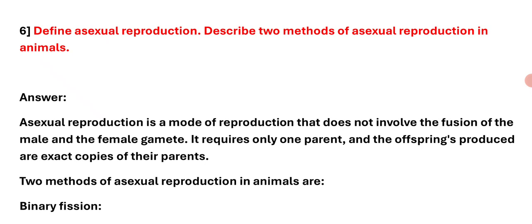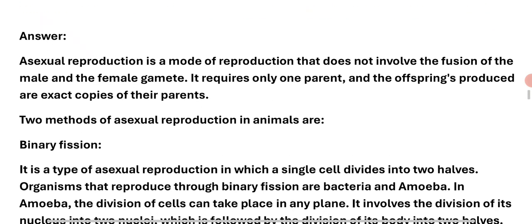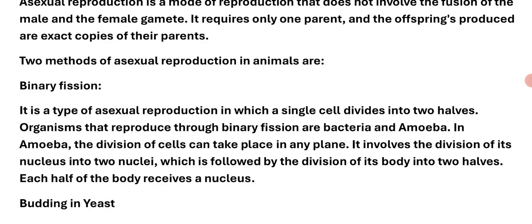Question 6: Define asexual reproduction and describe two methods of asexual reproduction in animals. Asexual reproduction is a method of reproduction that does not involve the fusion of the male and female gametes. It requires only one parent and the offspring produced are exact copies of their parents. Two methods of asexual reproduction in animals are binary fission and budding.